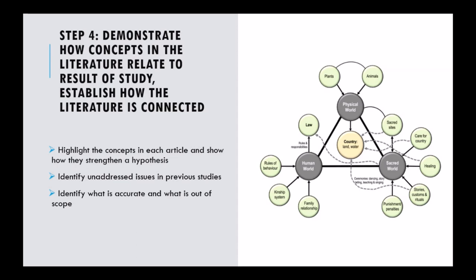Step four is to demonstrate how concepts in the literature relate to the results of the study — you need to establish how the literature is connected. Highlight the concepts in each article you are going to use in your literature review and show how they strengthen your hypothesis, your argument, or your theory. Show the pattern, show the progression — use that funnel approach and show your progression from the broad, such as violence, down to interpersonal violence.